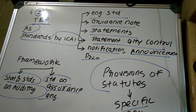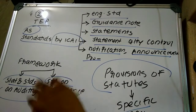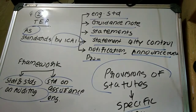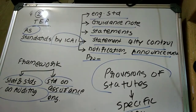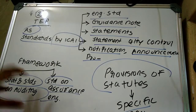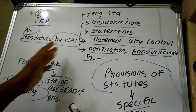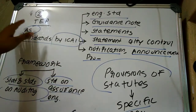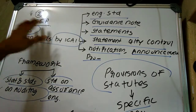Peer review means the examination and review of the systems and procedures to ensure the quality of assurance services, that is, whether they have been put in place. Peer review also determines whether the practicing unit is in compliance with technical, ethical, and professional standards.